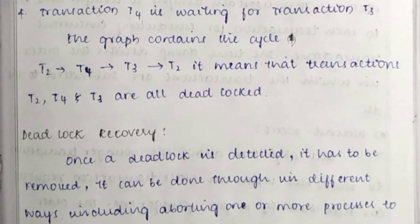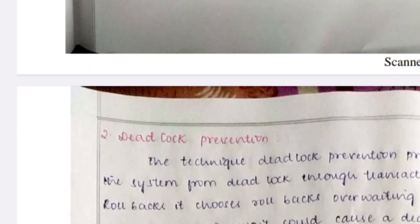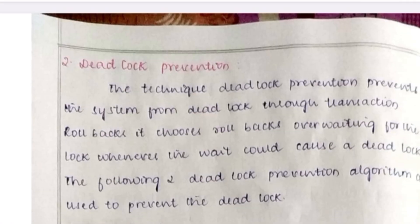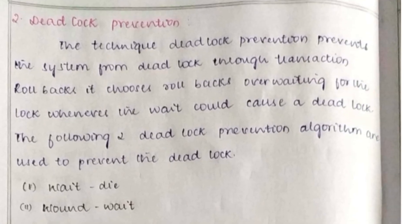Deadlock recovery refers to how we recover from a deadlock — it must be removed. This can be done in different ways, including using backup and recovery techniques to recover from the deadlock.